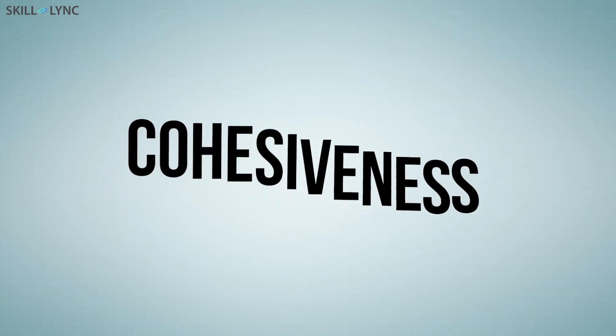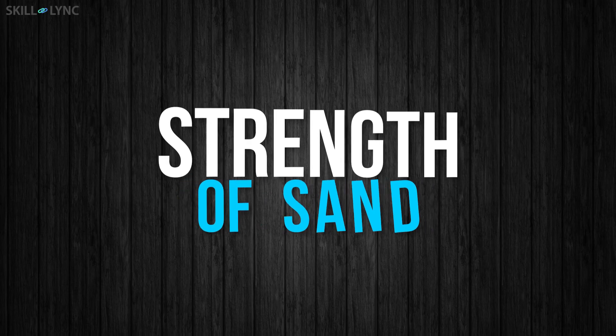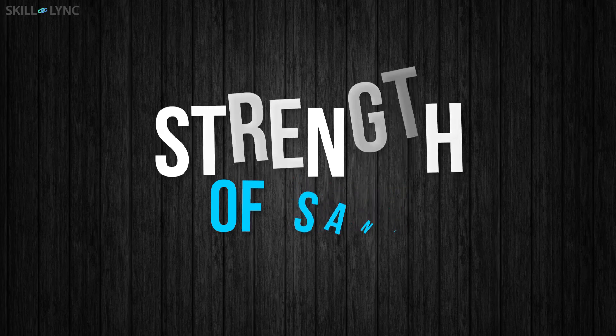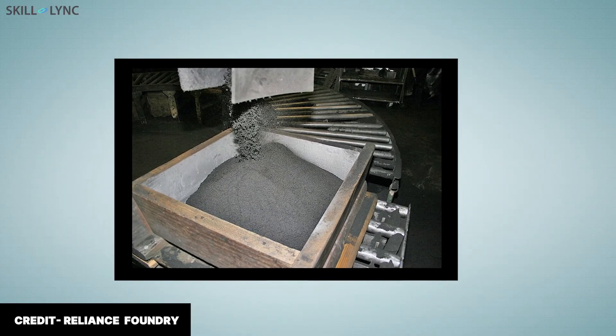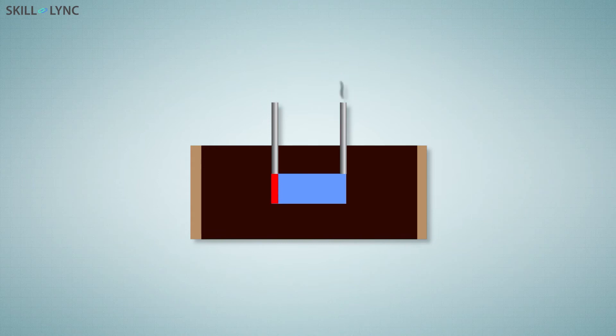Now, what's the next property? It's cohesiveness. Sand particles have the property of sticking with each other, and this property is called cohesiveness. This property is also referred to as the strength of the sand. As we know, the molding sand is poured into the molding box. If the sand doesn't have enough strength, it won't be able to hold its shape when the molten metal is being poured.